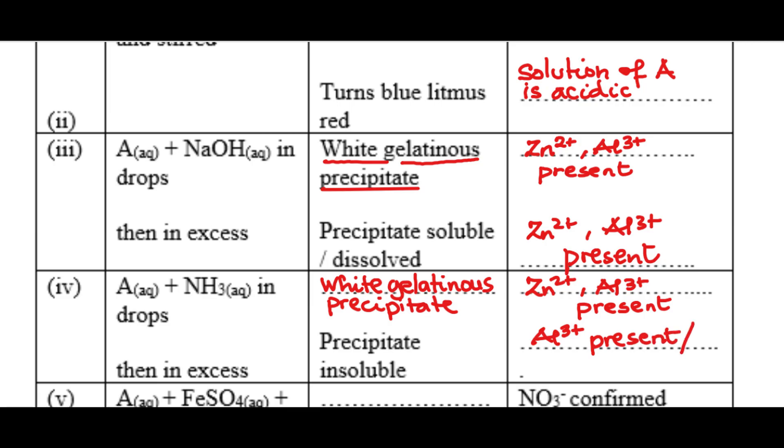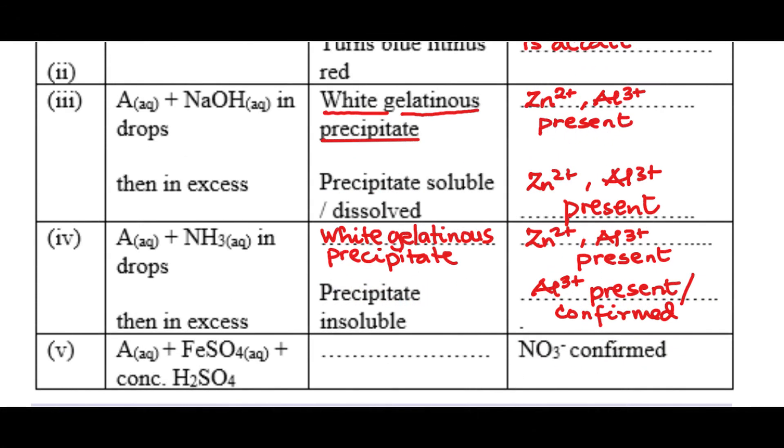Because based on your syllabus, it's the only ion that will form a white gelatinous precipitate with aqueous ammonia in drops and then the precipitate to be insoluble in excess aqueous ammonia. If you are getting any value from this tutorial, kindly hit the like button, subscribe to this channel and turn on your notification bell to always learn more. Alright, the last test here.